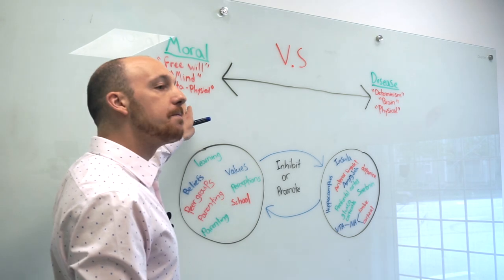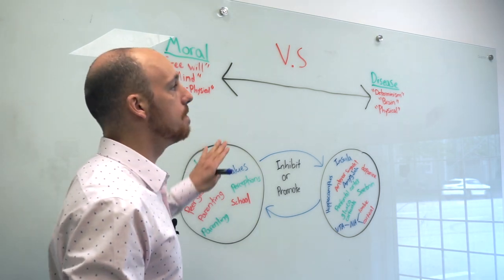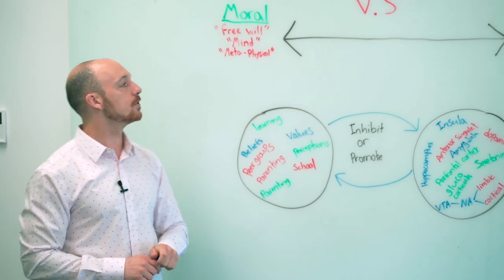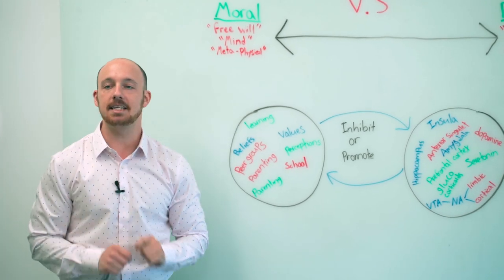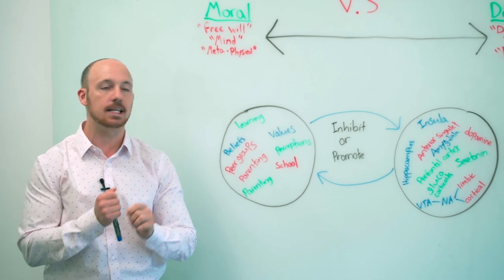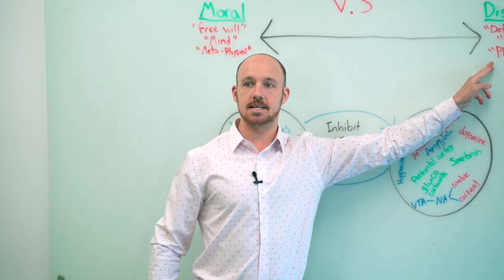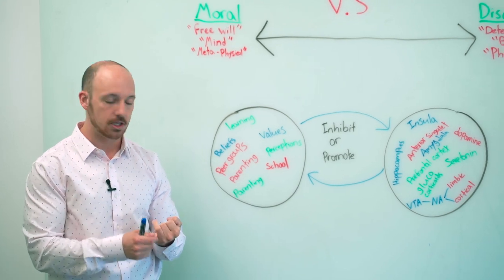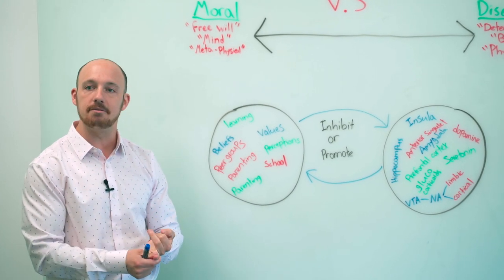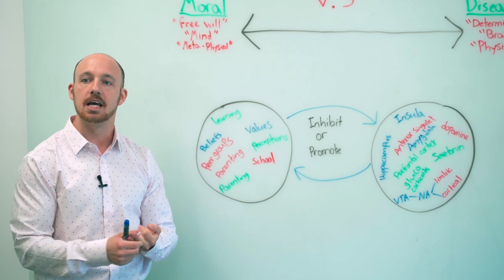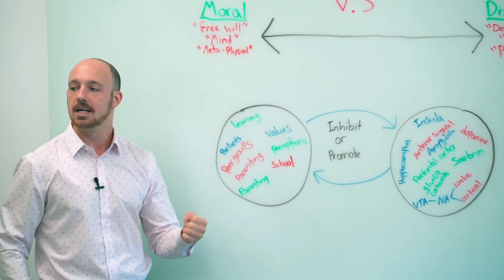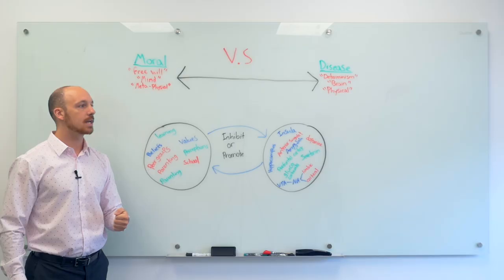And this is kind of regarded as an outdated model, the moral model, is a metaphysical model. And what metaphysical means is it's not made of matter. It's not made of atoms. So when something's metaphysical, it can't be studied directly.